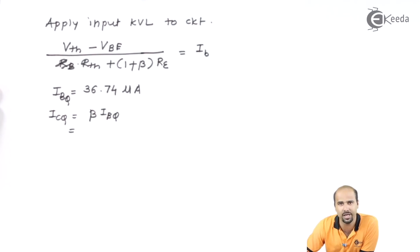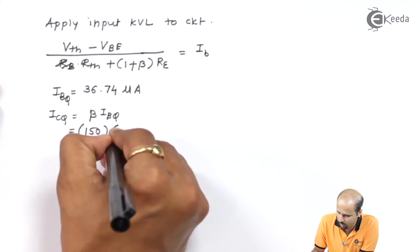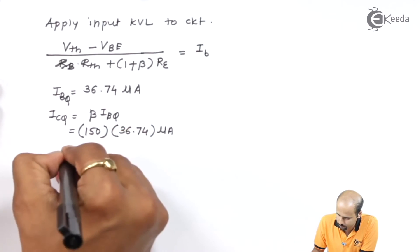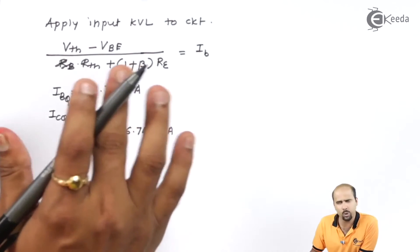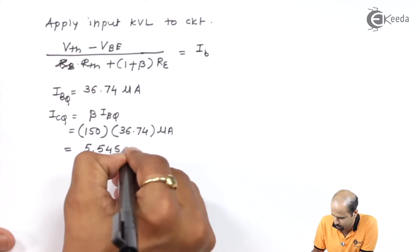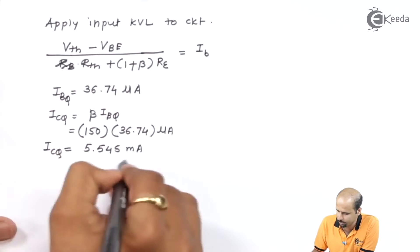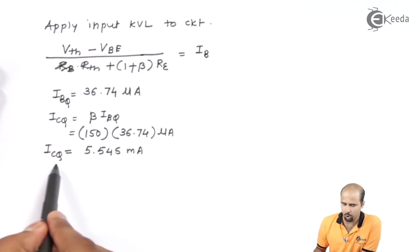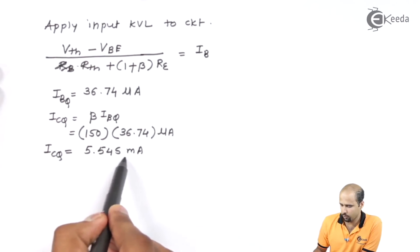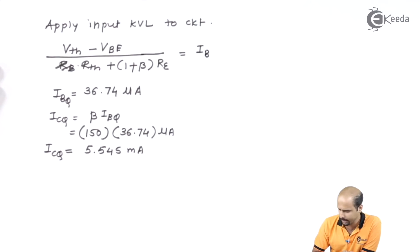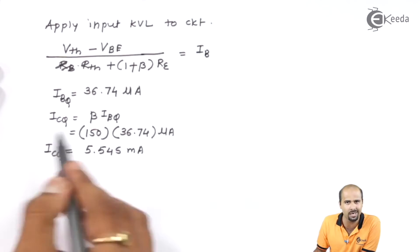For both stages, beta 1 and beta 2 are equal to 150. ICQ is equal to beta times IBQ, that is 150 multiplied by 36.74 micro ampere, giving us 5.545 milli ampere. That is the value of ICQ. For AC parameter calculation, we need R pi and GM. Since beta is very high, IE is nearly equal to IC, so we will directly use 5.545 mA for IE.